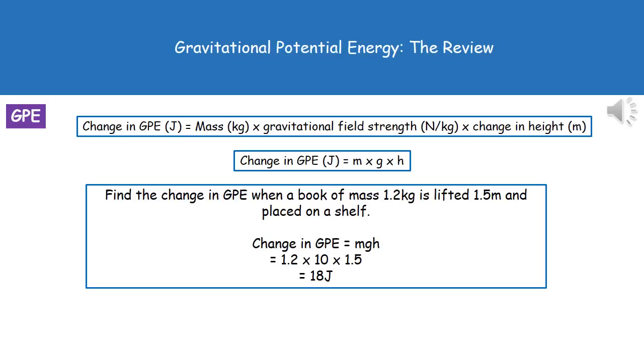To give you an example of the kind of question we might get, find the change in GPE when a book of mass 1.2 kilograms is lifted 1.5 meters and placed on a shelf.